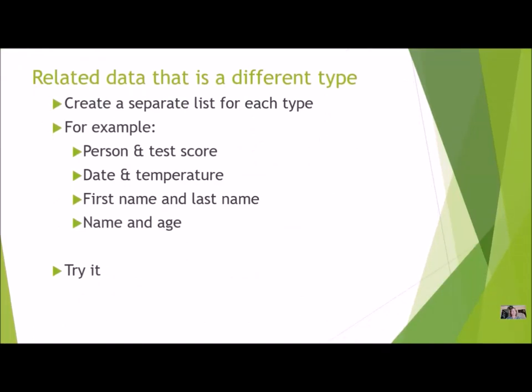Here are some examples where we need to do something a little different — we need to create a separate list for each type. For example, if I have a person's name and their test score, I shouldn't put that in one list. I'll need two lists and work with them together. Same thing with a date and temperature, or first name and last name, or name, age, and grade. Each one needs its own list, but I want to keep them in the same order so the name and the age share the same index across two separate lists.